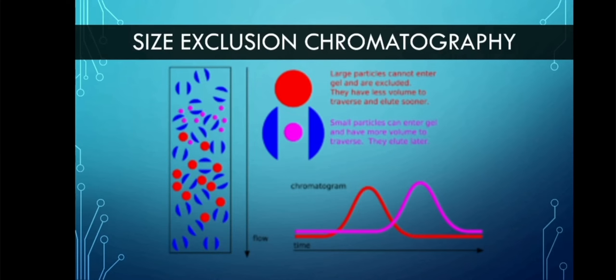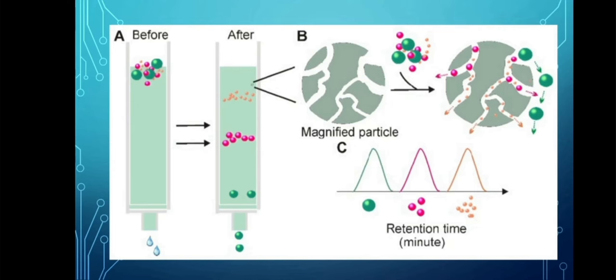Size exclusion chromatography. In size exclusion chromatography, we have large particles and small particles. Large particles cannot enter gel and are excluded. They have less volume to traverse and elute sooner. Small particles can enter gel, have more volume to traverse, and elute later. From the name itself, size exclusion, it is excluded through sizes. Also known as gel filtration because it uses gel, it is the mildest of all chromatography techniques.